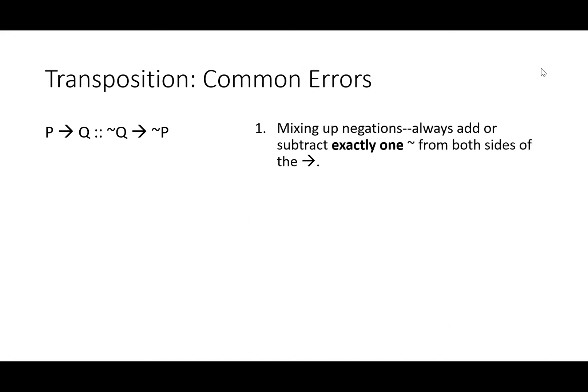There's really only one common error with transposition, and that's mixing up our negations. And I don't think that's really an error of using the rule wrong, so much as what happens when there's a lot of negations moving around and changing signs all the time. So as with any rule that lets you change from positive to negative, do it carefully. Always add or subtract exactly one negation from both sides of your conditional, and you'll get this rule right.